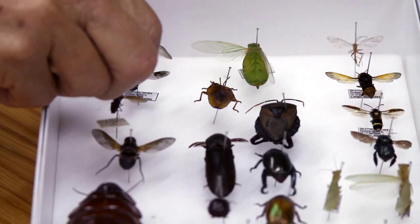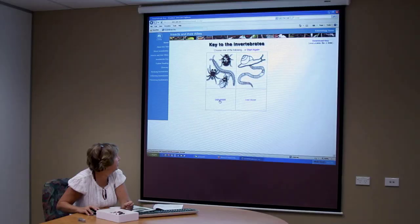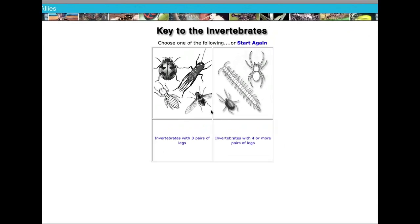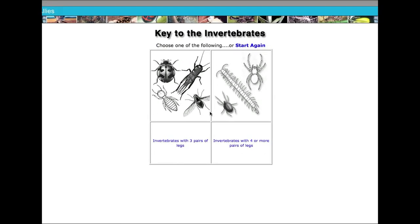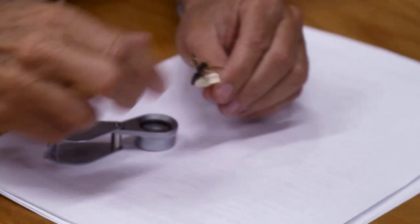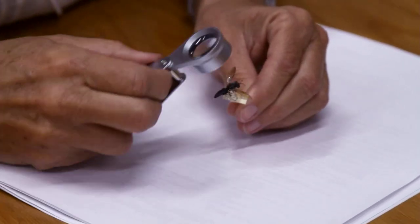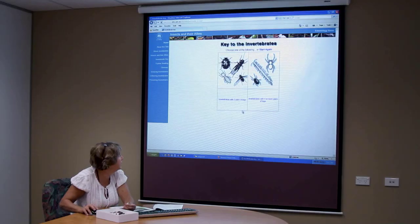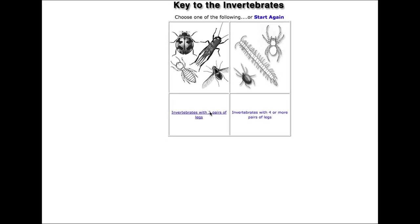The first question is very easy: does it have legs or not? Yes, it does have legs. The second question is how many pairs of legs does it have. It actually does have three pairs of legs — it doesn't have four or more.